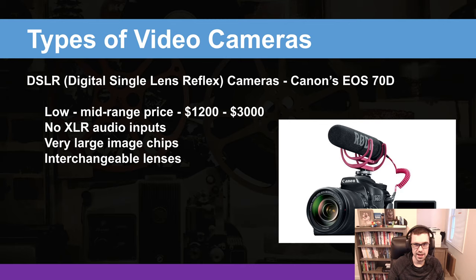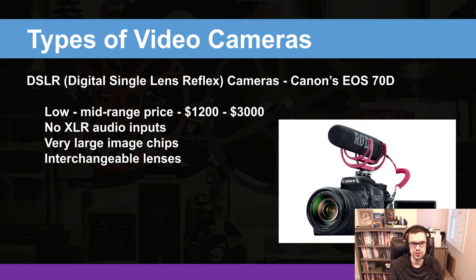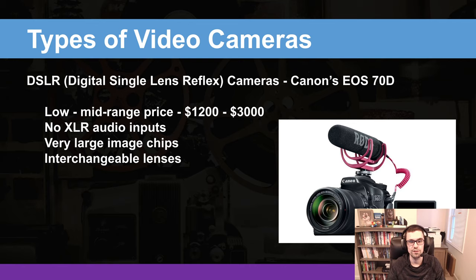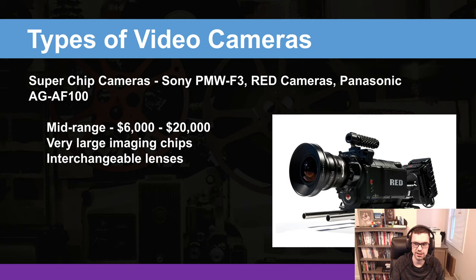And then we have the DSLR — the digital single lens reflex camera — which I'd say is the best place to start if you're looking to get into videography. Examples include Canon's EOS 70D, Sony's Alpha series, and Panasonic's GH series. They're priced from $1,200 to $3,000. While they lack built-in XLR inputs, they have very large imaging chips for a relatively low cost, making them very enticing. They're also versatile — you can use them to take photos as well, including thumbnails, and have a wide range of interchangeable lenses available.